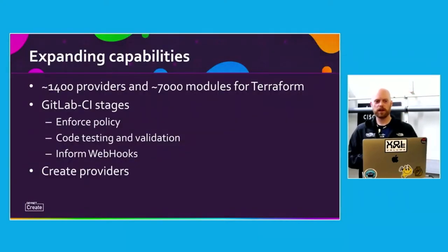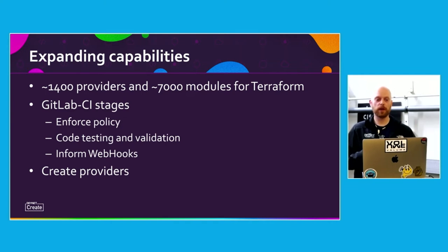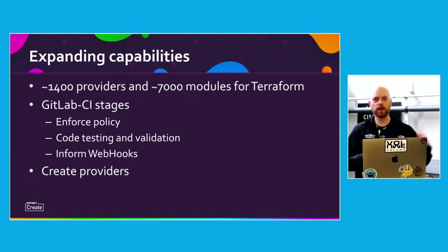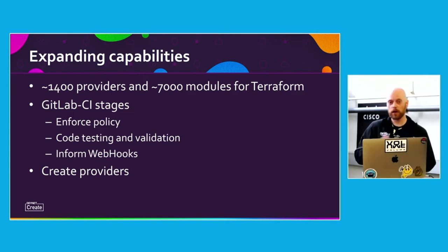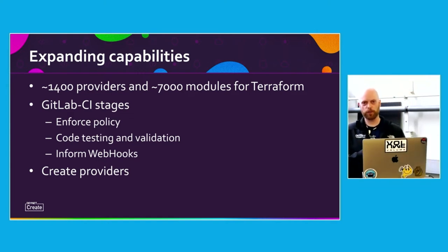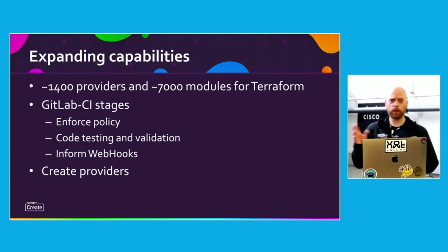Expanding these capabilities is quite easy. There are 1,400 providers available today and 7,000 modules for Terraform. You can extend your GitLab CI stages by adding policy enforcement, code testing and validation, and informational webhooks that call your ChatOps or ticketing system. Additionally, you can create your own providers — we've actually written a couple of providers in order to present this demo here today, all of which will be available at the end of the talk.